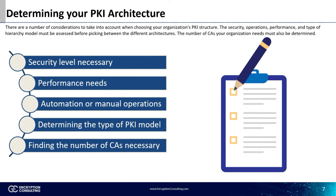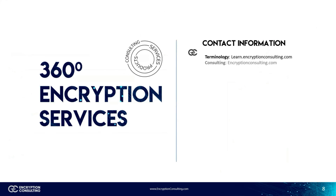The final step in determining your PKI architecture is finding the number of CAs you need. You can estimate this by analyzing the size of your organization, the geographic spread of your organization, the technical requirements needed to apply for a certificate, along with a few other factors. Visit our website learn.encryptionconsulting.com to learn more about PKI or watch one of our other videos on PKI and the components that make it up.